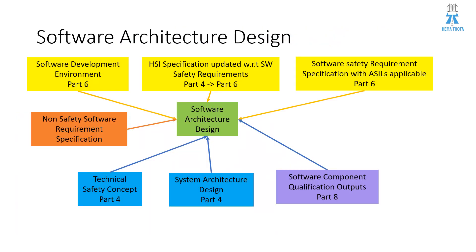We will have multiple inputs for software architecture design. These include the software development environment from Part 6, the Hardware Software Interface specification (HSI spec) which was part of Part 4 but moved to Part 6, and the Software Safety Requirement Specification (SSR) with the applicable ASIL levels for each software safety requirement. We also consider the non-safety software requirement specification, the technical safety concept from Part 4, system architecture design from Part 4, and software component qualification output from Part 8. The Part 4 and Part 8 inputs are optional.